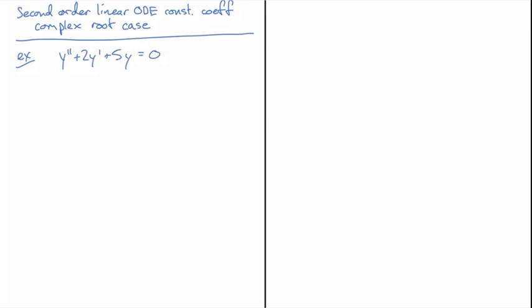Okay, so here's the example: y double prime plus 2y prime plus 5y equals 0. We start with the ansatz y equals e to the rt, and we get a characteristic equation of r squared plus 2r plus 5 equals 0.